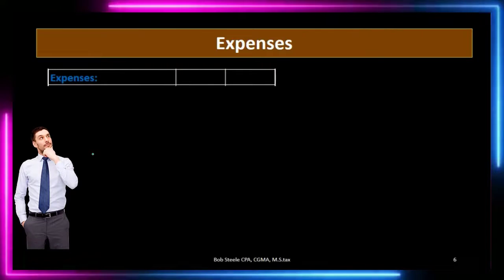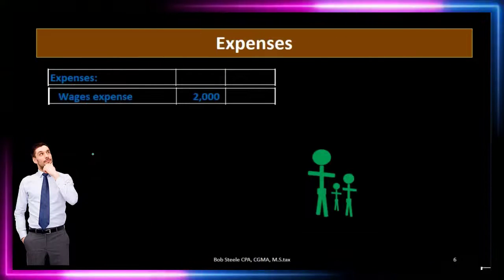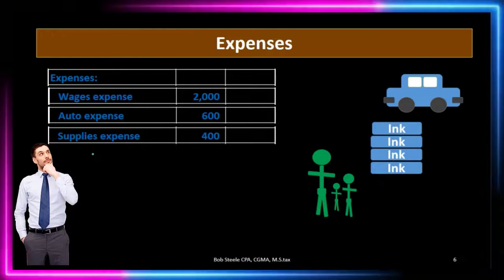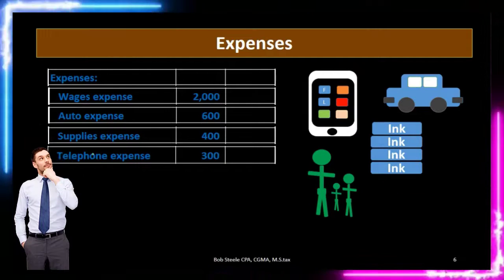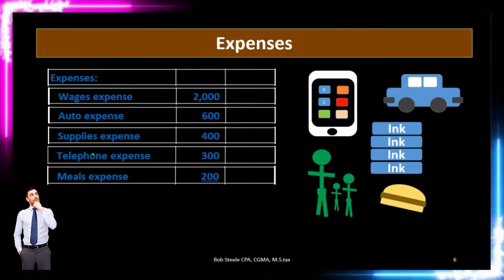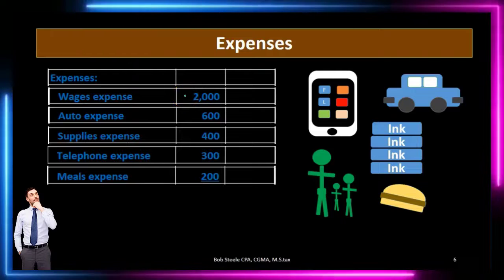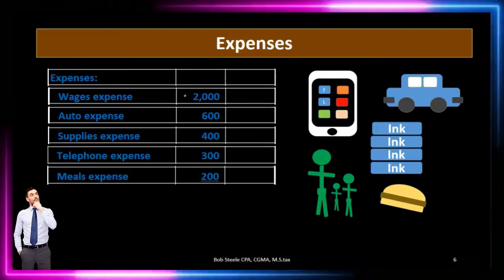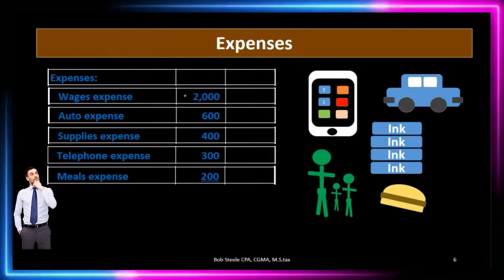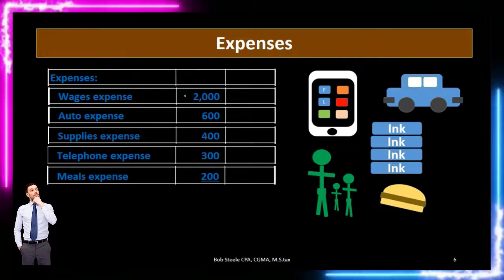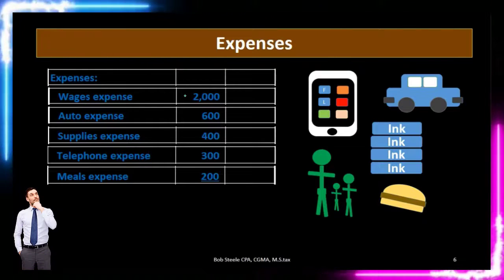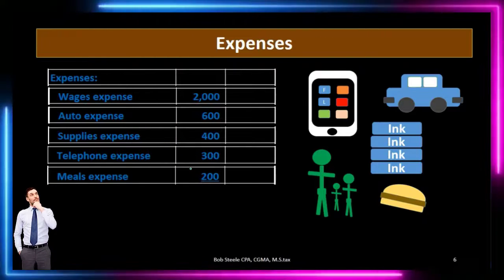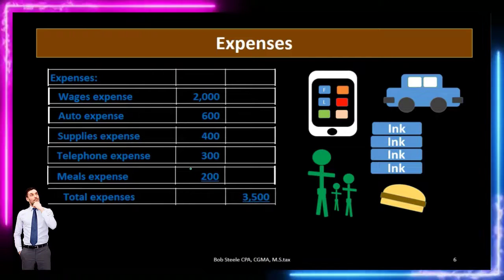Therefore, we're going to have the expenses subcategorized, and we'll list them out: wages of $2,000, auto expense — again, that's the gas and the maintenance — $600, supplies $400 (that's what we consumed), telephone expense $300, and meals and entertainment $200. There's no particular order that the income statement has to be listed in, but we do want to list expenses in some type of logical order. Oftentimes the largest cost being on top is a logical format. If we add up all the expenses — $2,000 plus $600 plus $400 plus $300 plus $200 — we have total expenses of $3,500.